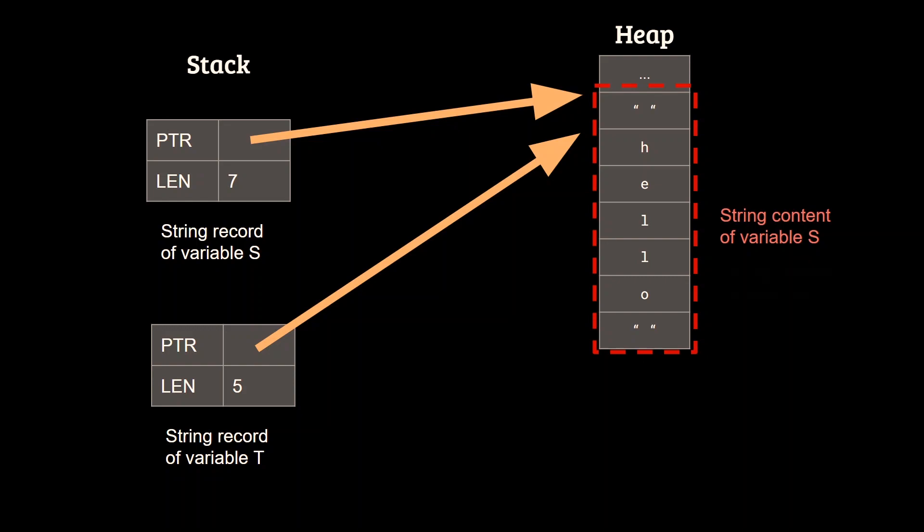From the user perspective, t will be a string with length 5, and content hello, but no additional allocation will be necessary, greatly improving memory efficiency.